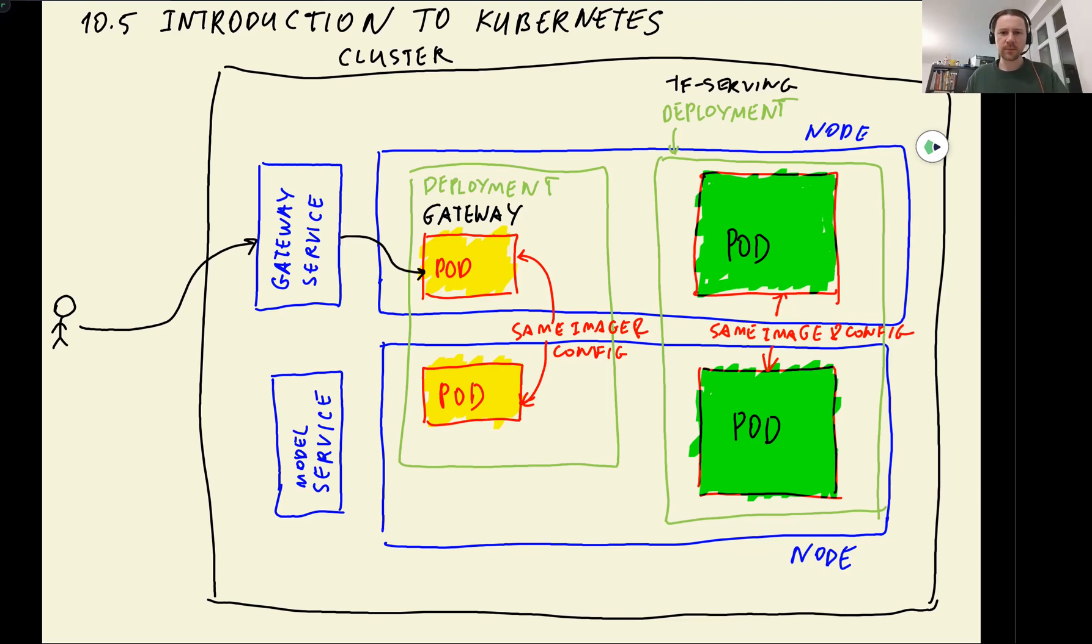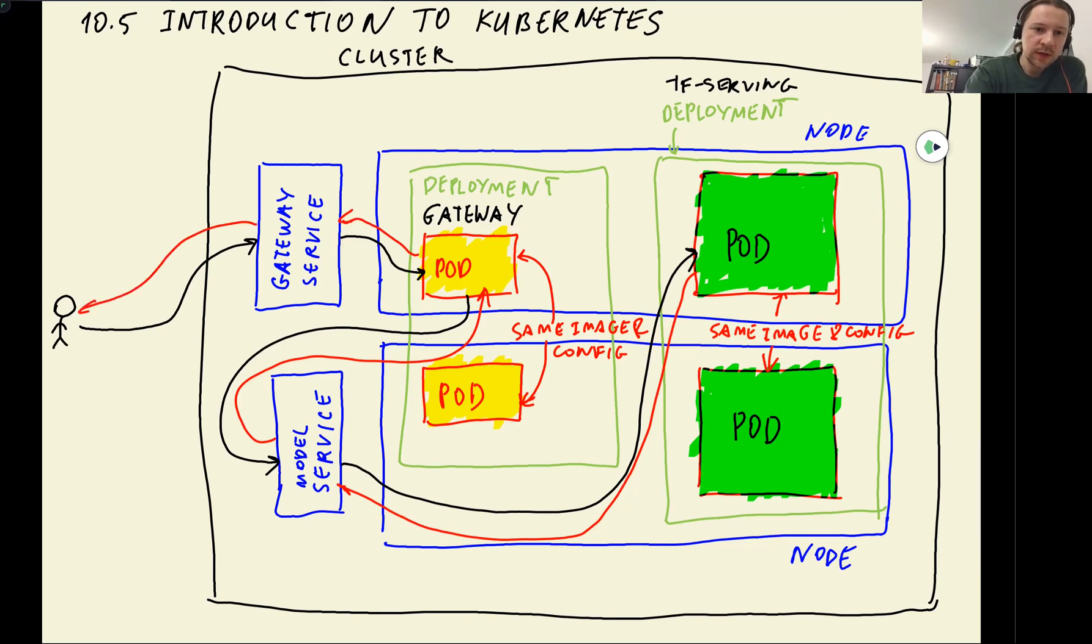So let's say it routes the request here. What happens here is, we download the image, we resize the image, we prepare the image. Then we convert this image to protobuf and send the request to TensorFlow serving deployment. But the pods here in the gateway deployment, they don't know how to access specific pods here. What each of these pods does, it then goes to the model service. And then the model service routes the request to one of the pods. So let's say it routes the request to this pod. And then this pod gets the protobuf request. It replies back with predictions. And then this prediction comes back all this way back. And then the gateway gets the predictions from the service and then sends the reply back to the user.